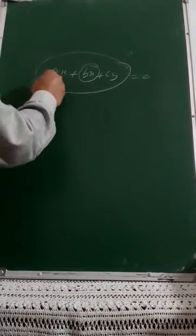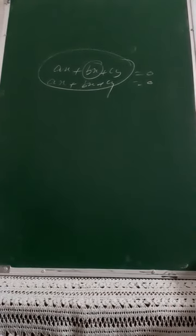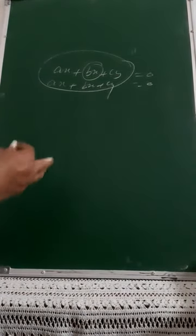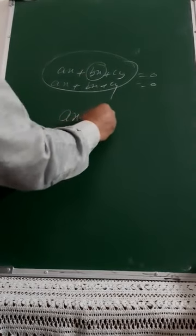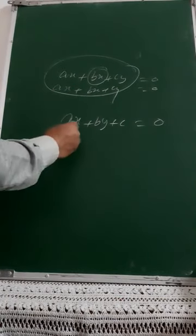Moving to the topic of equations in two variables discussed yesterday — I need to correct one mistake. The standard form was written incorrectly as ax plus bx plus cy equals zero. Please make the correction: the standard form should be ax plus by plus c equals zero. The variable x cannot be repeated; c is the constant term and carries no variable.